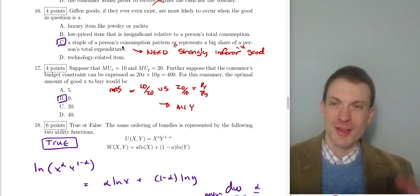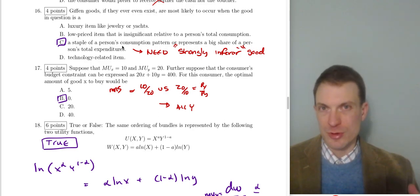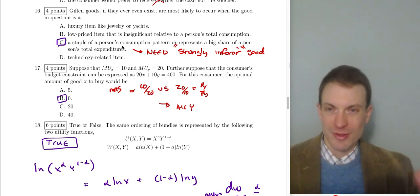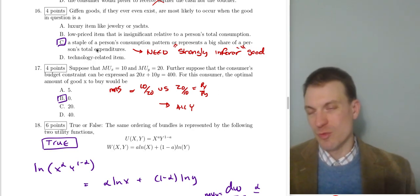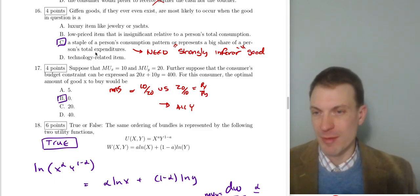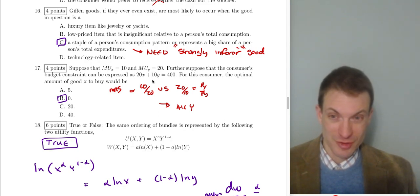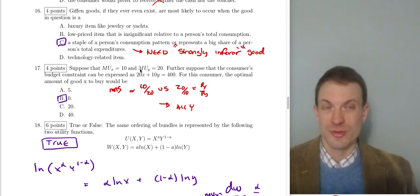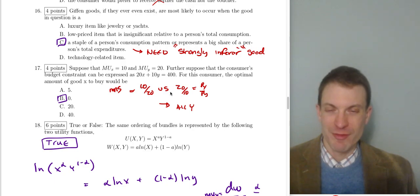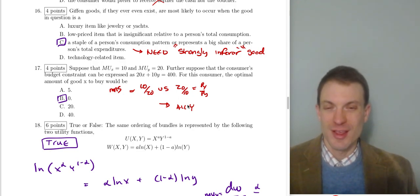The good must be strongly inferior because the income effect has to swamp the substitution effect. As the price rises, the substitution effect wants you to buy less of it — the income effect has to overcome that and lead you to buy more. Question seventeen: MUx = 10, MUy = 20, budget constraint 20x + 10y = 400. The MRS = 10/20 = 1/2. The price ratio = 20/10 = 2. The budget constraint is steeper than the indifference curves — this is a corner solution. How much x do we buy? None.